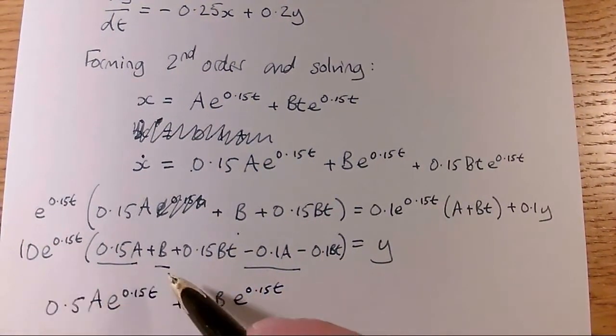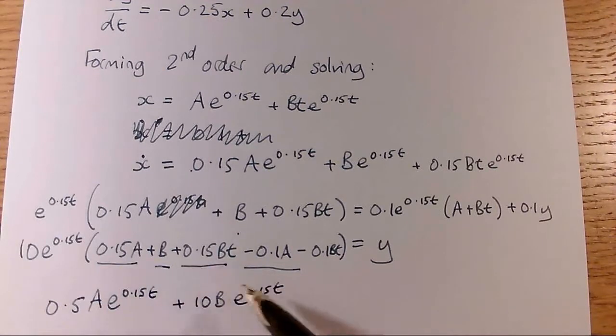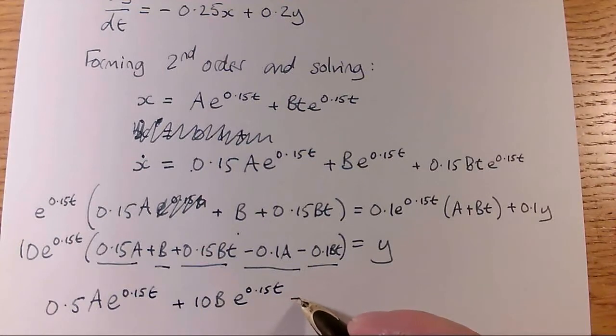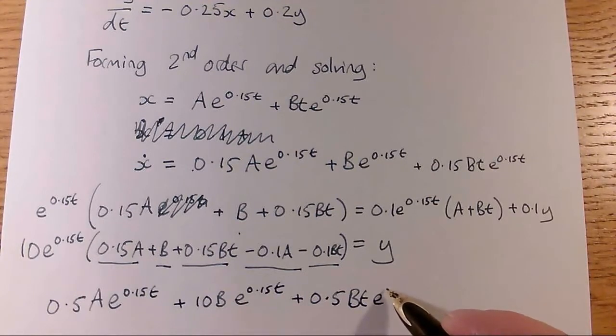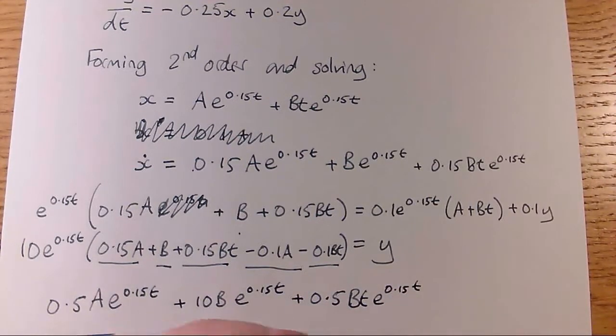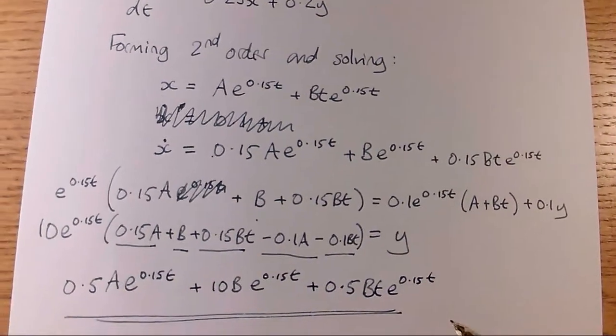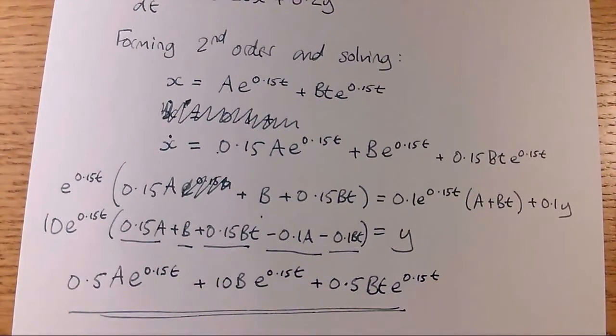And then I've got these, I've got 0.15 minus 0.1, which is 0.05 times the 10 is plus 0.5bte to the 0.15t, which lo and behold is that solution that the answer bank got on the back of the textbook has got, but not involving anything like as much work, so I hope that helps.